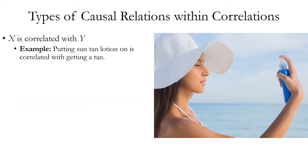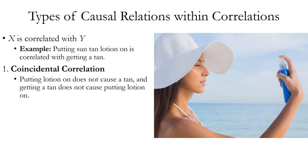Let's talk in more detail about the types of causal relations that can occur with correlations. None of these types necessarily involve fallacies — but understanding how to reason carefully about correlations and causations helps you spot false cause fallacies. Assume there's a correlation between two factors X and Y. Example: putting suntan lotion on is correlated with getting a tan. One possible relationship is that the correlation is coincidental — putting lotion on does not cause a tan and getting a tan does not cause putting lotion on. Another possibility is that X causes Y — putting lotion on causes getting a tan. Another is reverse causation: Y causes X — getting a tan causes putting lotion on.